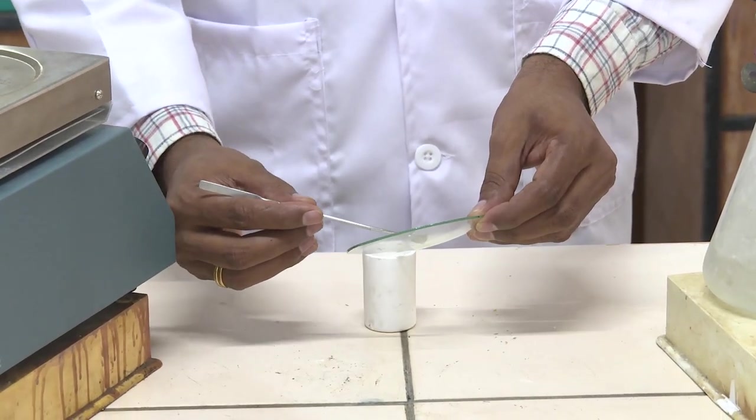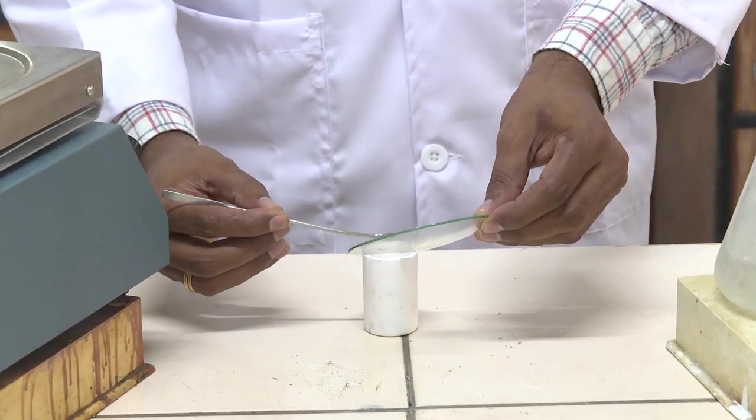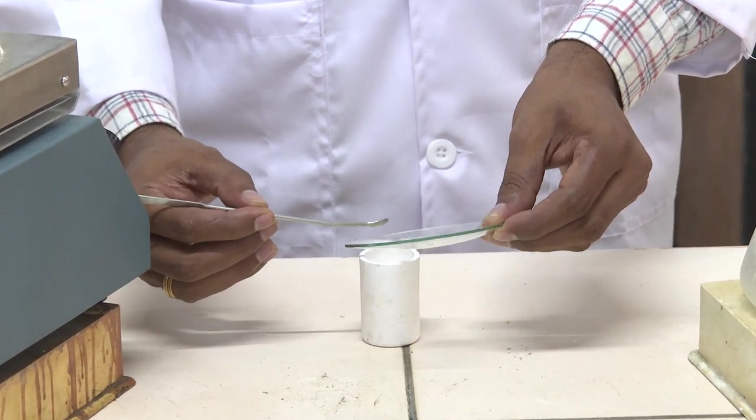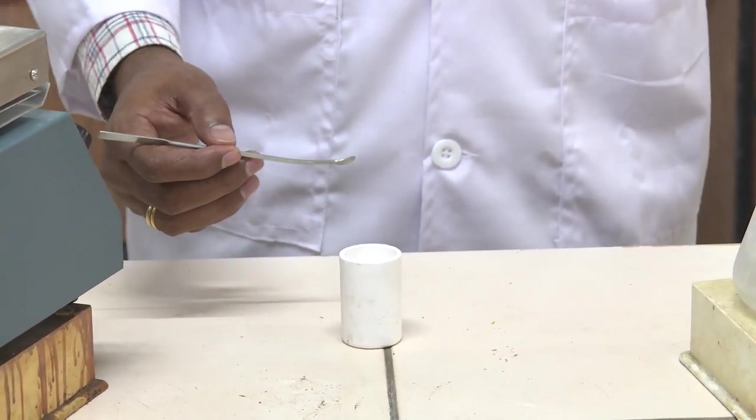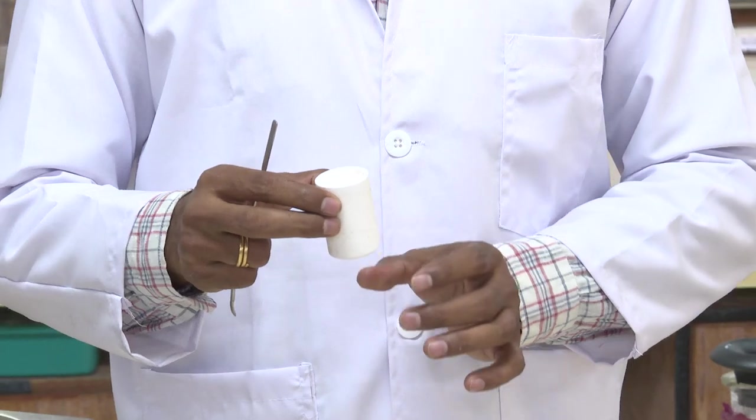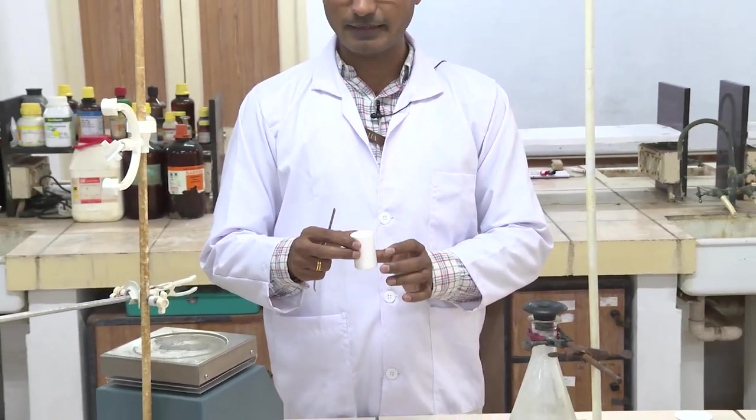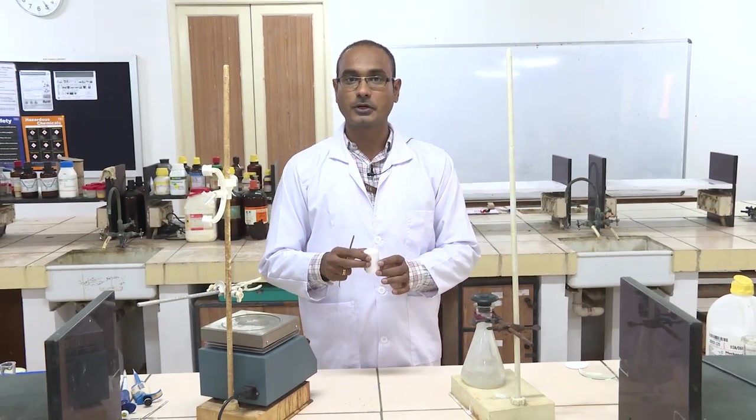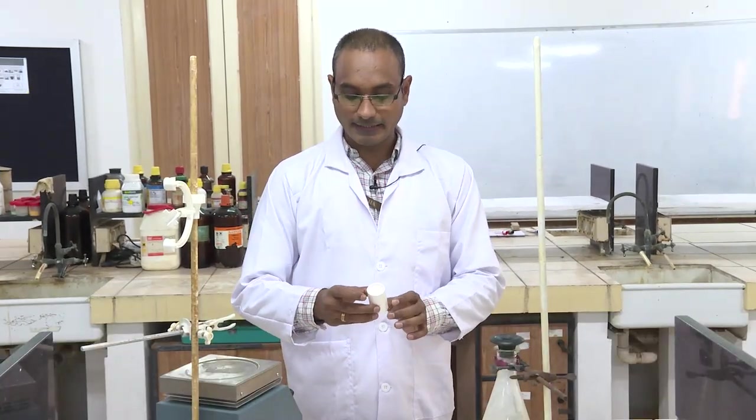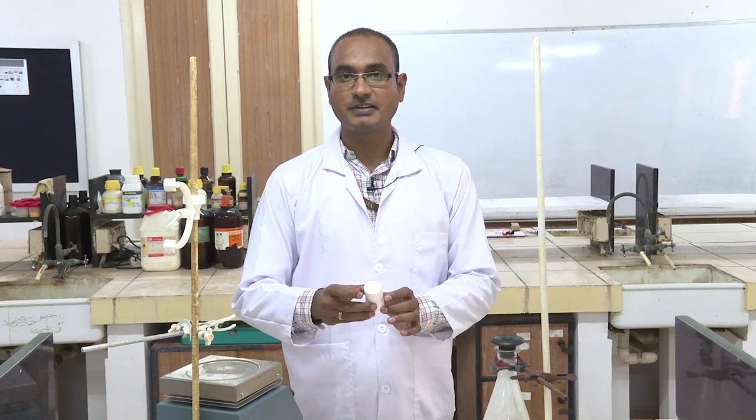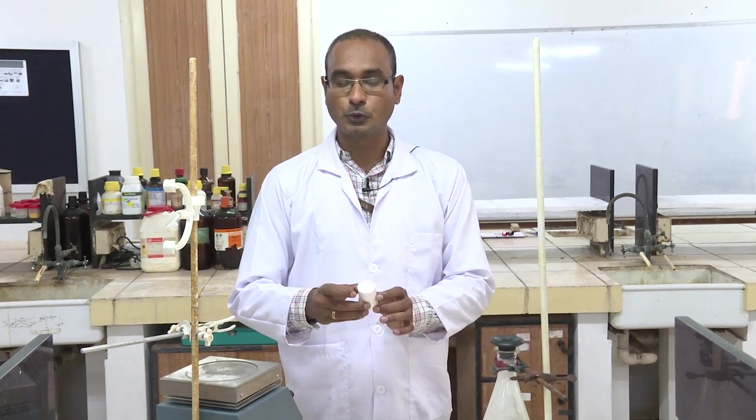Now I am going to transfer this material into a silica crucible. Now I am going to keep this material for the calcination in muffle furnace for 2 hours at 400 degrees centigrade. I took the silica crucible from the muffle furnace after it came to room temperature.